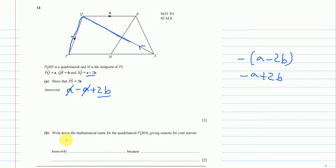In part B you can see we have to give the mathematical name of the PQRM. So PQRM and we have to give reasons. One thing from part A we already know this. This root from P to S is 2B.